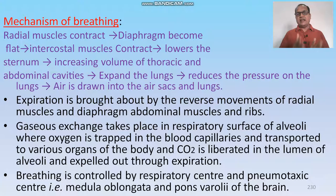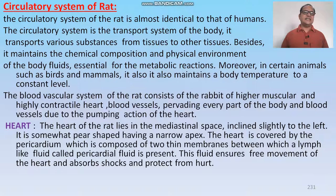Gaseous exchange takes place at the respiratory surface in the alveoli, where carbon dioxide is liberated into the lumen. The circulatory system of the rat is almost identical to that of the human being — it is a transport system of the body that transports various substances from one tissue to other tissues.